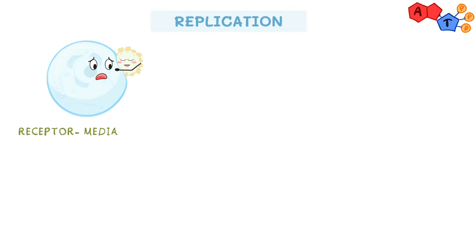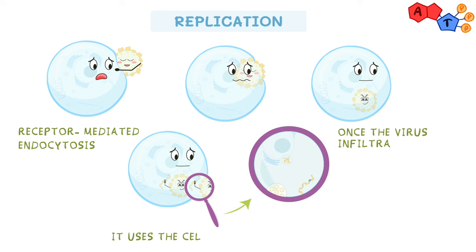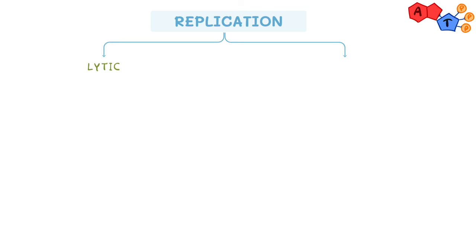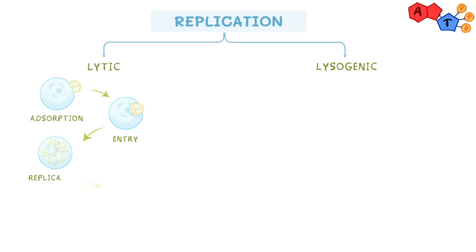Once the virus or its genetic material has infiltrated the cell, it uses the cell's machinery to make its own proteins and replicate — basically forming more viral particles within the host cell. This can happen in either of two cycles: the lytic cycle and the lysogenic cycle. In the lytic cycle, the virus uses the host machinery to replicate and build more viruses to the point that the cell ruptures, or lyses — hence the name lytic.